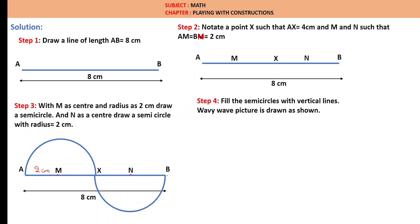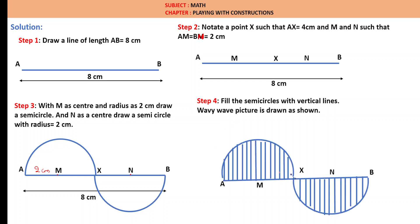Now, fill the semicircles with the vertical lines. Wavy wave picture is drawn as shown. This is wavy wave picture and we are making this semicircle filling with vertical lines.